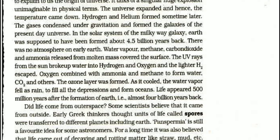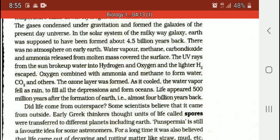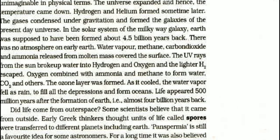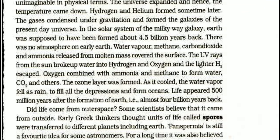There was no atmosphere on early Earth. Water vapors, methane, carbon dioxide, and ammonia were released from the molten mass and covered the surface. UV rays from the sun broke up water into hydrogen and oxygen. Oxygen combined with ammonia and methane to form water, carbon dioxide, and others. The ozone layer formed, protecting Earth from UV rays. It cooled, water vapors fell as rain, filled all the depressions, and formed the oceans.